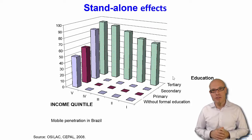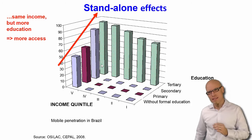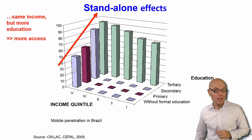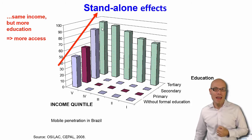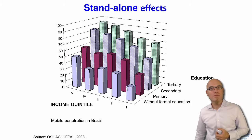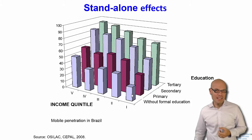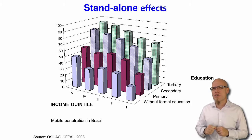Now we can look at the dimension of education. These are all the rich people — the top 20% of earners — and we can see that education itself also has a stand-alone effect. Here we have people without formal education who are rich, and here are people who have a college degree and money — they have the highest level of access. So you have this two-dimensional logic where income and education each have independent effects, and you can study who has the least access to the digital realm.